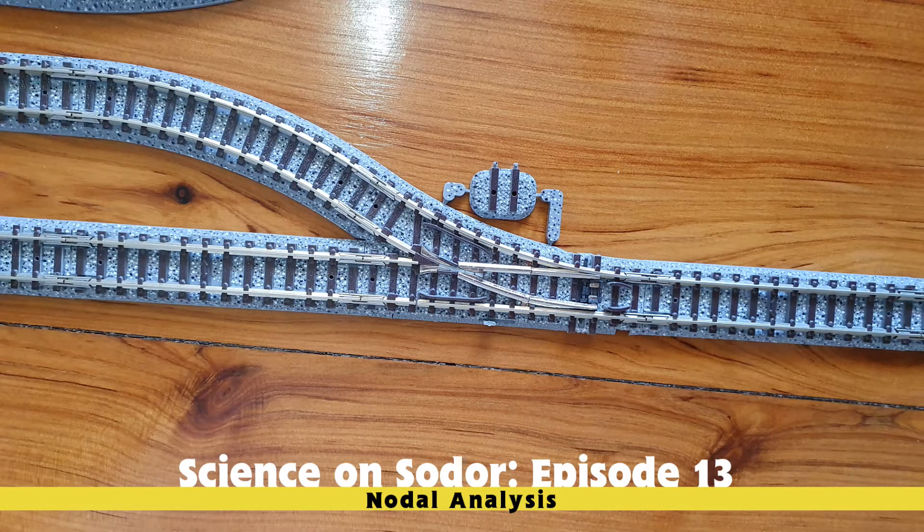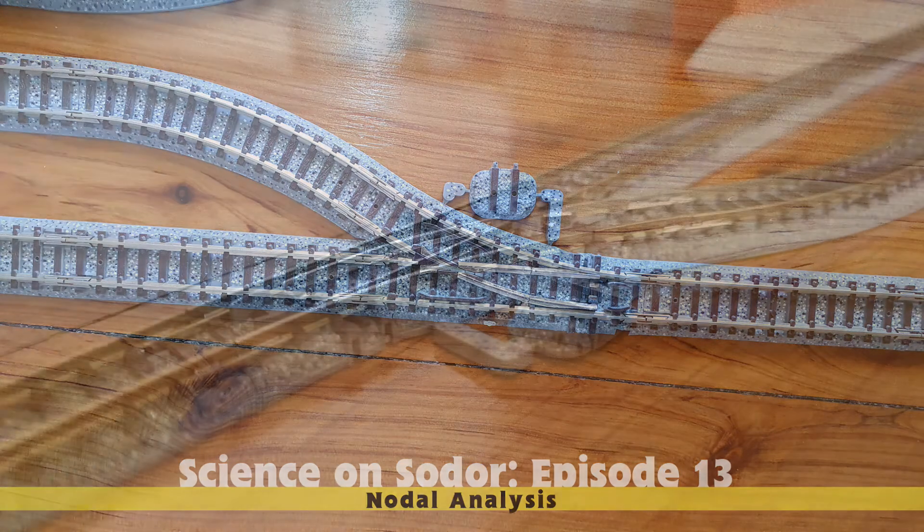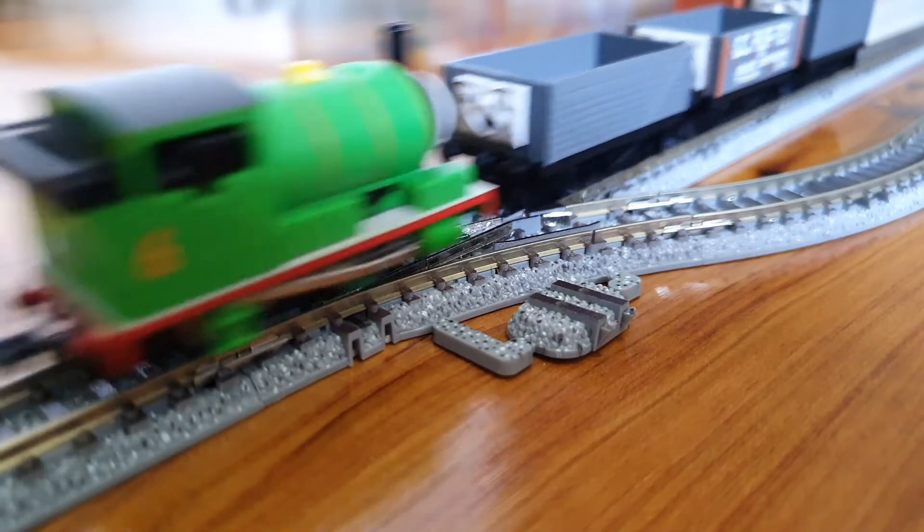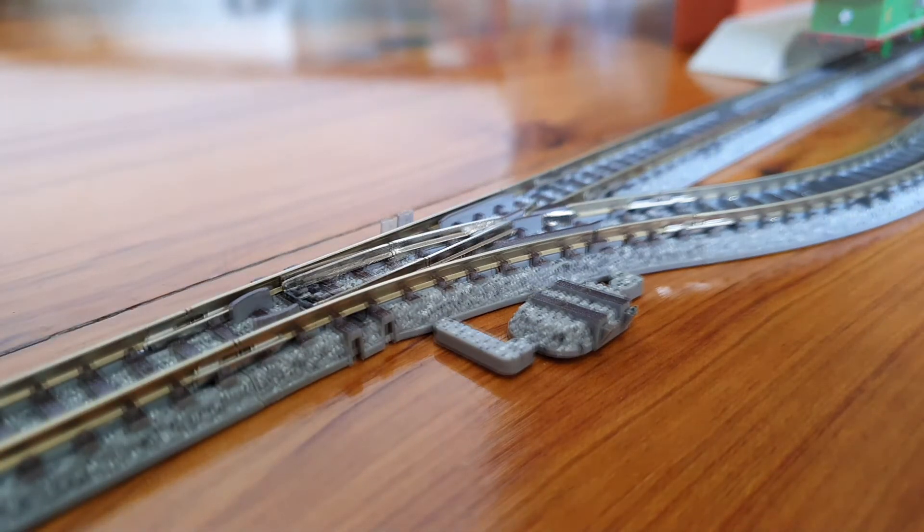Nodes are also called junctions, just like this one here on my branch line. And as you can see, whatever goes into one part of the node must come out the other.